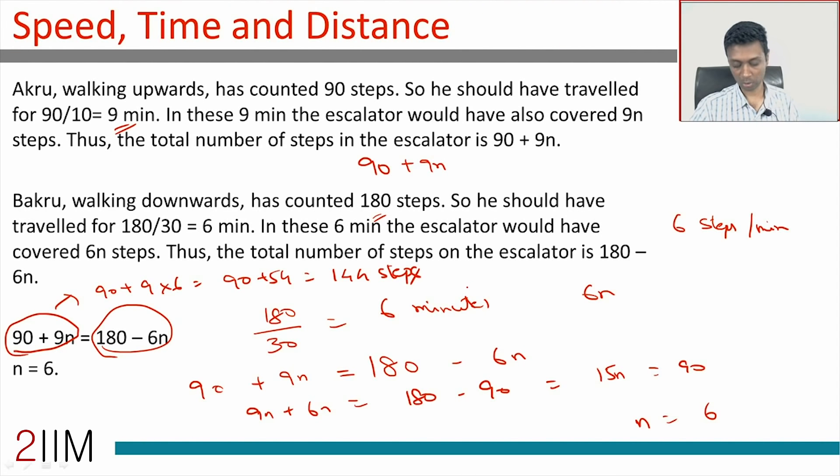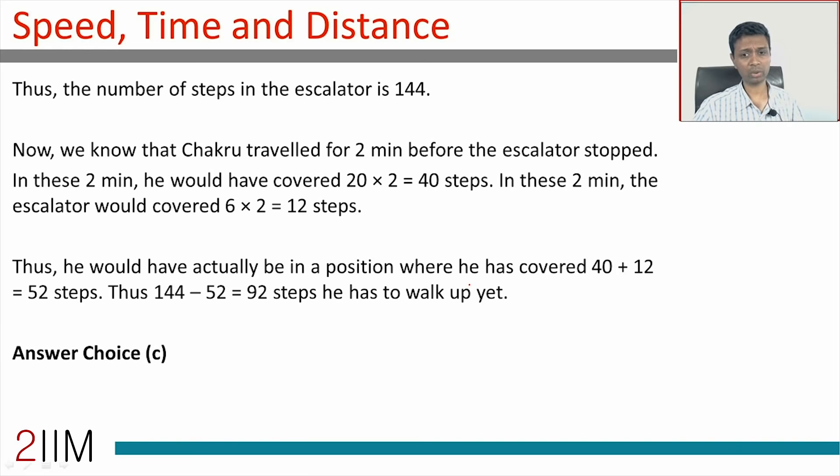Chakru does 20 steps a minute. He travels for 2 minutes before the escalator stops. In this 2 minutes, he would have traveled 20 × 2 = 40 steps. The same 2 minutes, the escalator would have done 2 × 6 = 12 steps. So he has totally traveled 52 steps. Totally there are 144 steps remaining, or he has to travel 144 - 52 = 92 more steps to reach where he wants to.